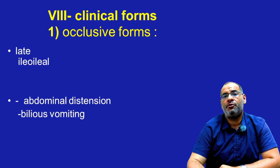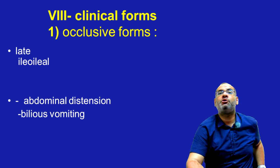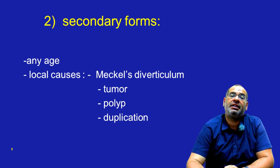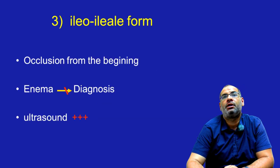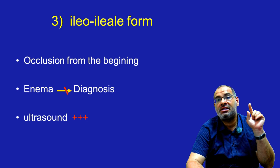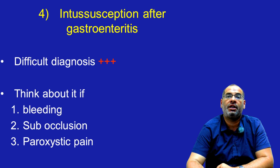We described the typical form of intussusception, but we can have other forms, like occlusive forms seen in late or ileo-ileal presentations — with abdominal distension and bilious vomiting in the foreground. We can also have secondary forms that can be seen at any age, with local causes such as Meckel's diverticulum, tumor, polyp, or duplication. In ileo-ileal intussusception, occlusion is seen from the beginning and enema cannot make the diagnosis — only ultrasound can.